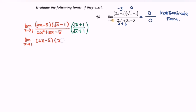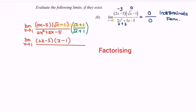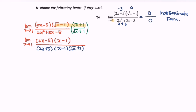After expanding the numerator, we have (2x - 5)(x - 1). For the denominator, 2x² + 3x - 5 factorizes — with the help of a calculator — as (2x + 5)(x - 1), and then multiplied by (√x + 1).